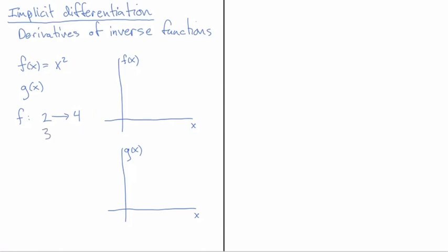Okay so 3 goes to 9 and so on. So now the question is what function g will take 4 and send it to 2, and it'll take 9 and send it to 3.